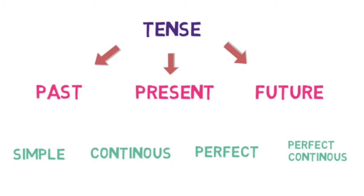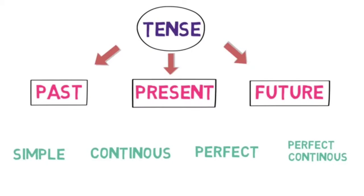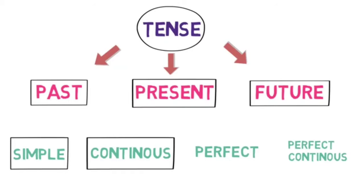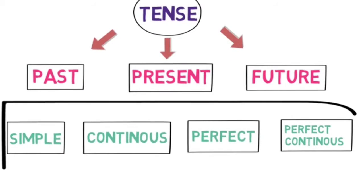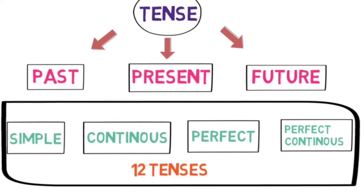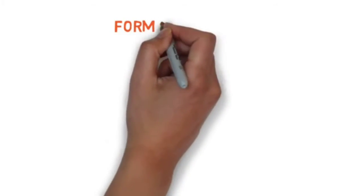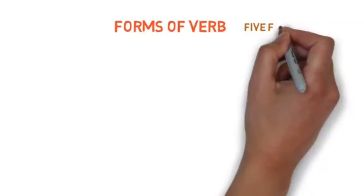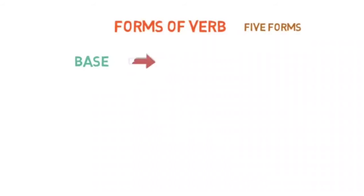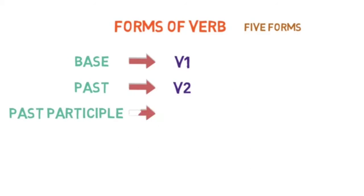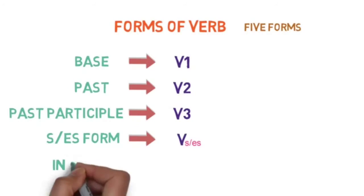Consider this as a family tree, children. The grandfather 'tense' has three children: past, present, and future. Each parent has four children with the same names — simple, continuous, perfect, and perfect continuous — giving us twelve siblings, meaning twelve tenses. To learn each of them, we need to know the forms of verbs, which are mainly divided into five forms: base form (V1), past form (V2), past participle form (V3), S/ES form, and ING form.